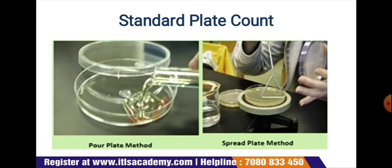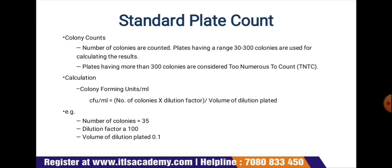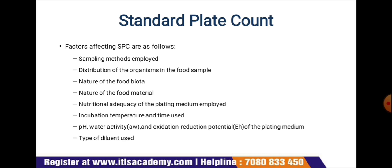After incubation, colony counting is performed. Plates having a range of 30 to 300 colonies are used for calculating results. Plates having more than 300 colonies are considered too numerous to count (TNTC). Colony forming units per ml (CFU/ml) is calculated as: number of colonies multiplied by the dilution factor, divided by the volume of dilution plated. For example, if 35 colonies are counted, the dilution factor is 100, and volume plated is 0.1 ml.